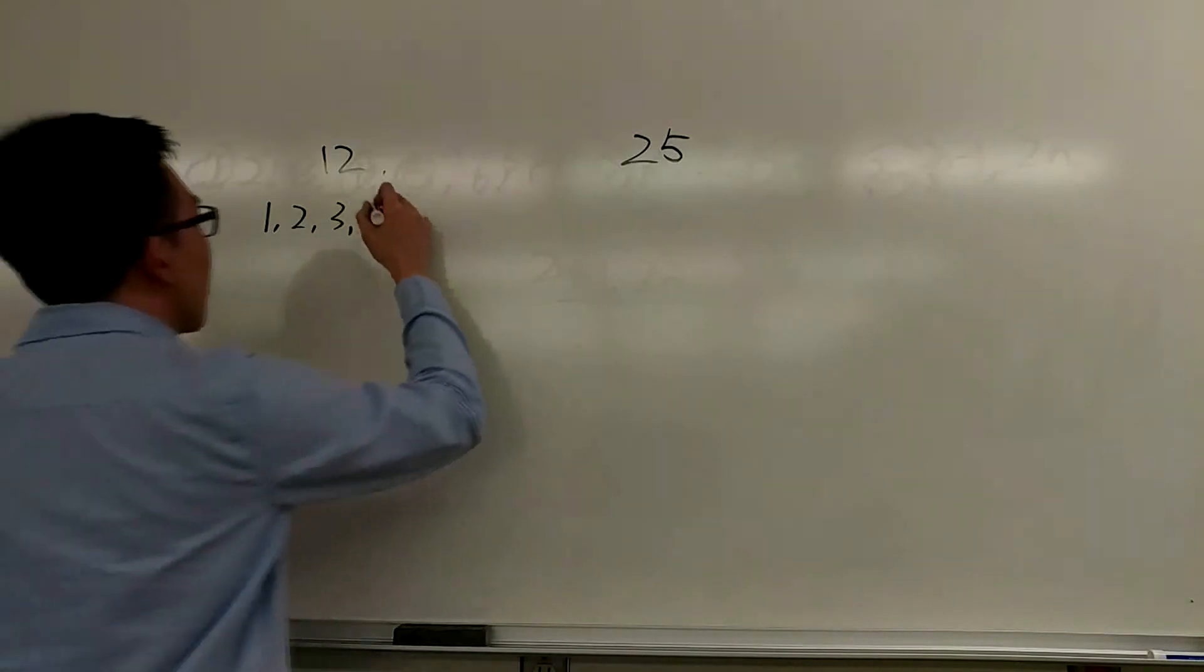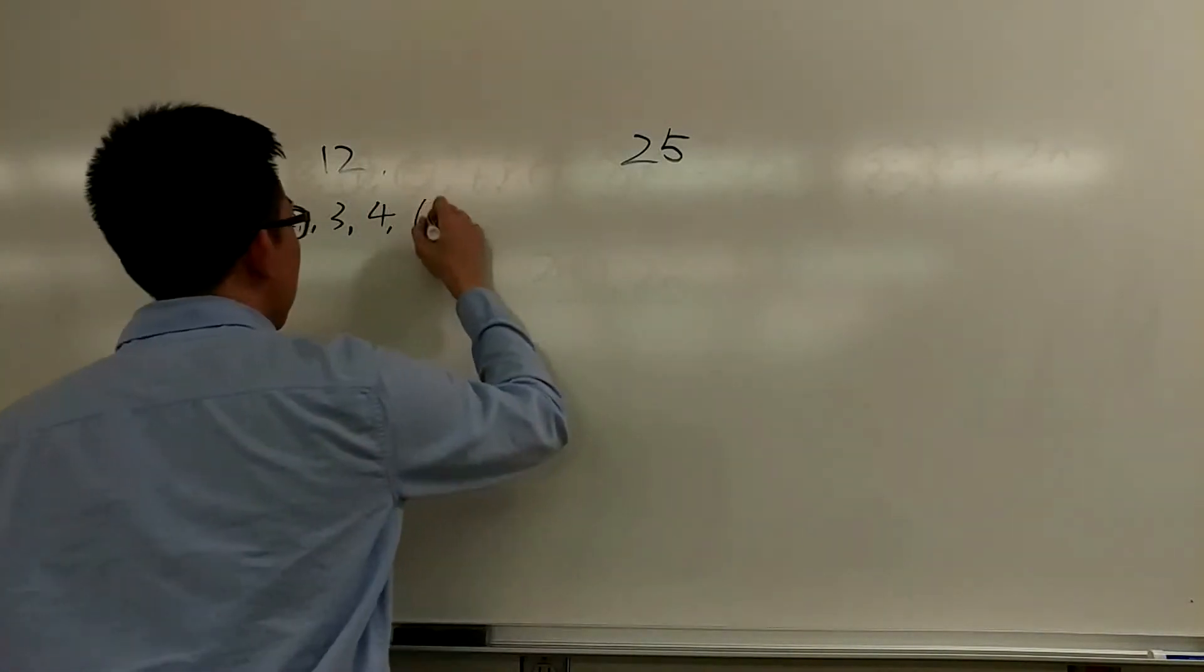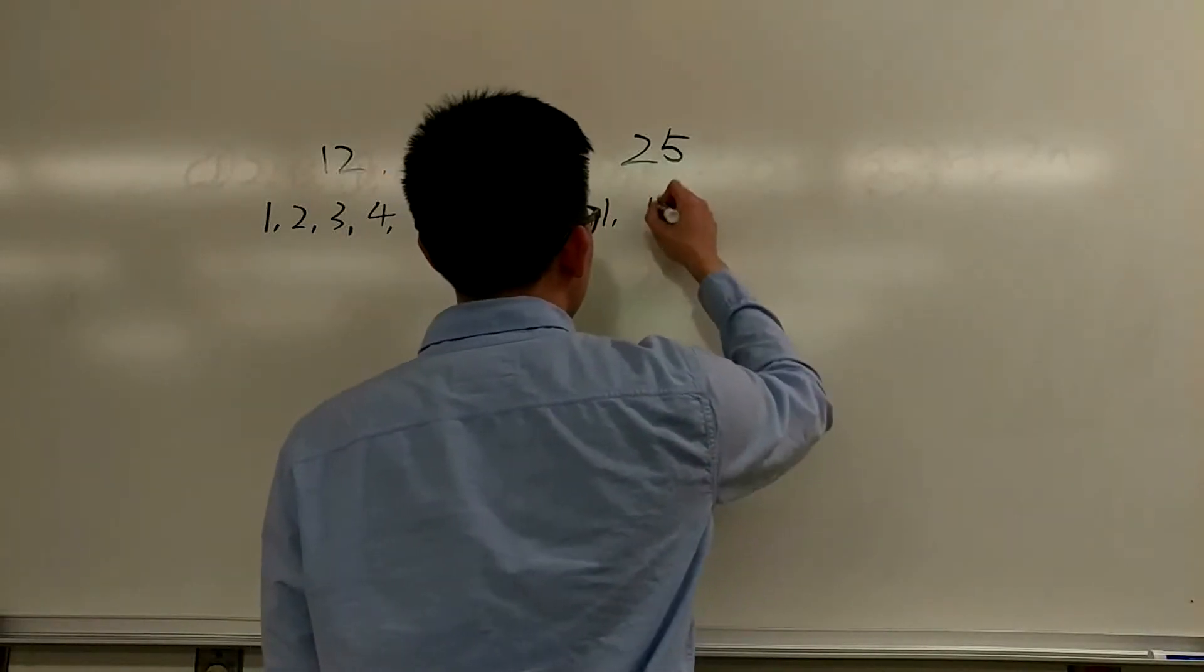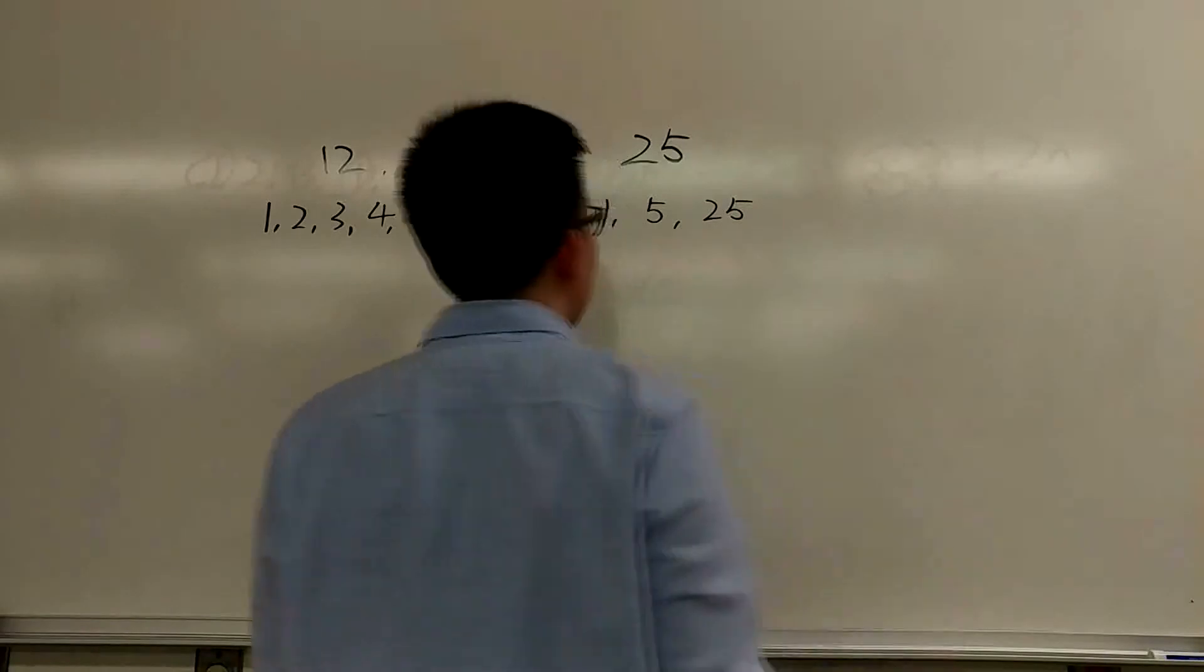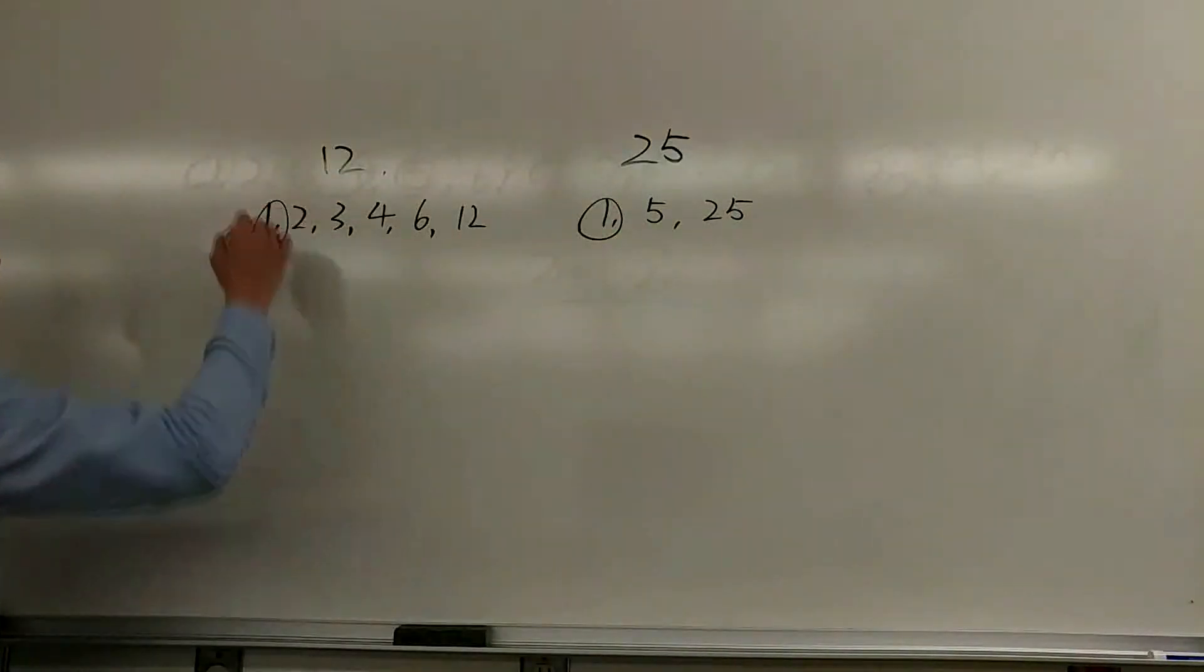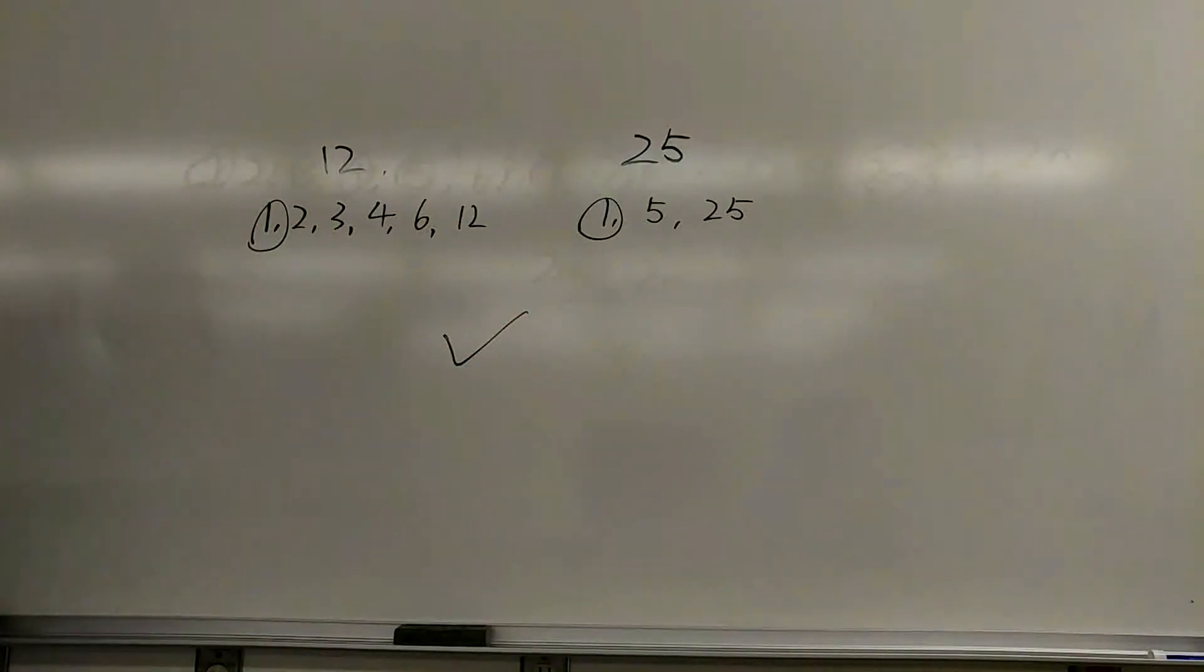For example, the integers twelve and twenty-five. The factors of twelve are one, two, three, four, six, and twelve. The factors of twenty-five are one, five, and twenty-five. The only factor in common is one, so the integers twelve and twenty-five are relatively prime.